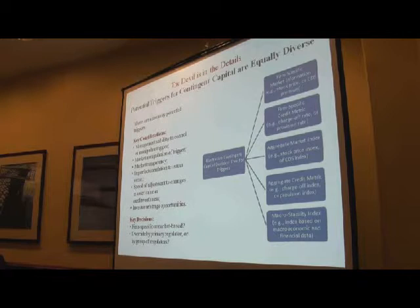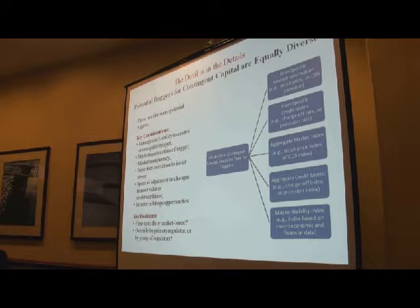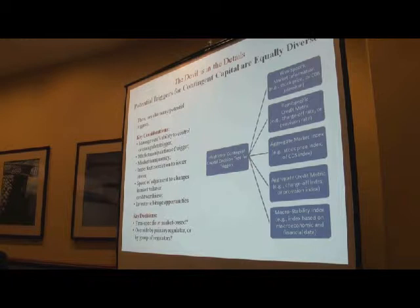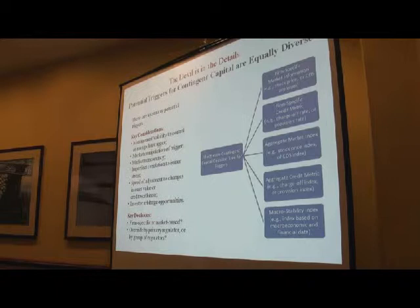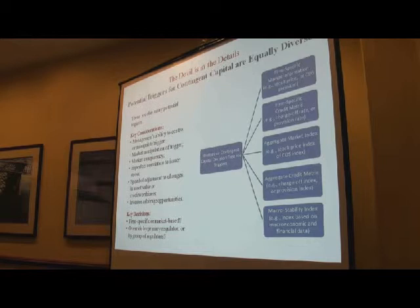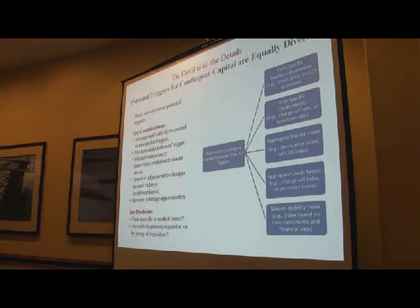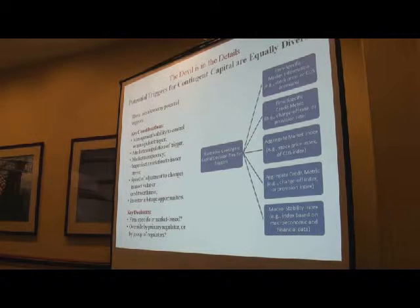There's also the question of what kind of trigger to use, and those are equally diverse — firm-specific triggers like stock price triggers or credit default swaps, or various macro-stability indices. Key questions include whether management has the ability to control the trigger, market transparency, and imperfect correlation to the actual process of the firm. There are also decisions about whether to use market-based triggers or an override by the primary regulator.